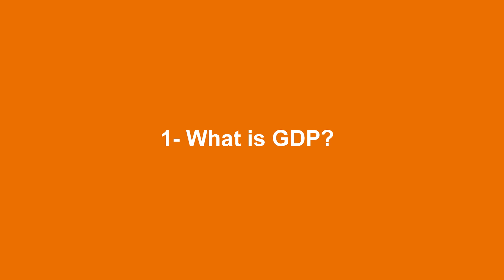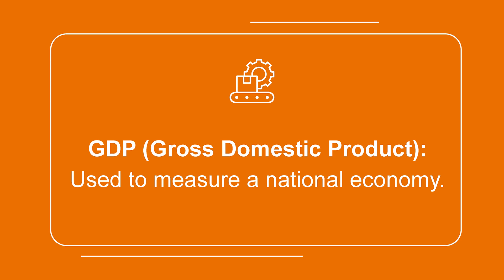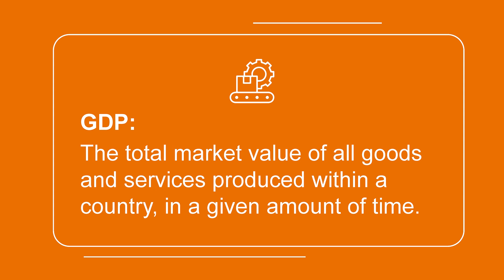Let's start off by discussing what GDP is. Gross domestic product, or GDP, is the most widely used way to measure a national economy. It is often cited on the news and in reports by governments and central banks. GDP is the total market value of all goods and services produced within a country — for example, in the US — in a given amount of time, for instance in the year 2021. Sometimes it is referred to as the size of the national economy.